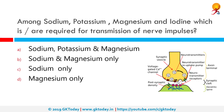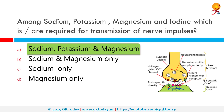Among sodium, potassium, magnesium and iodine, which is or are required for transmission of nerve impulses? The correct answer is sodium, potassium and magnesium. The transmission of a nerve impulse along a neuron from one end to the other occurs as a result of electrical changes across the membrane of the neuron. The membrane of an unstimulated neuron is polarized — that is, there is a difference in electrical charge between the outside and the inside of the membrane.